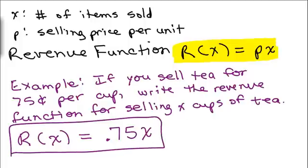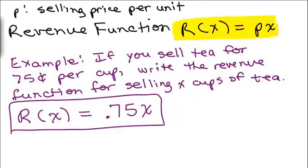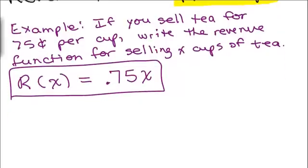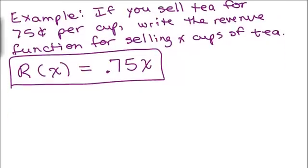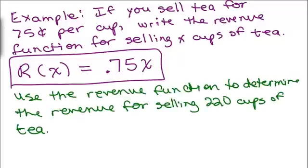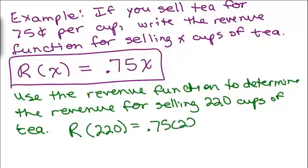Now, for instance, our problem a second ago: What if you sold 220 cups? We would just use this function here. How much would it be for 220? We figured that out without using algebra, but to write it this way, we would say R(220) would be 0.75 times 220, and that is our $165.